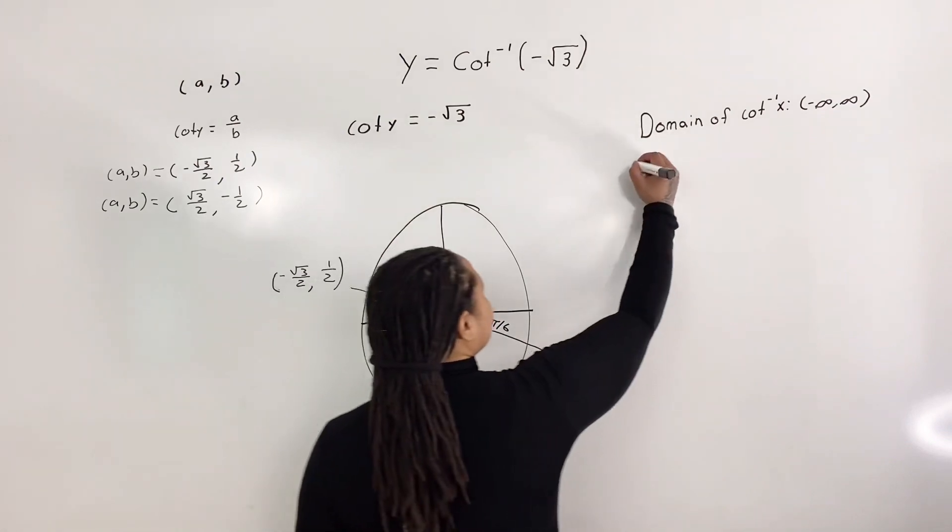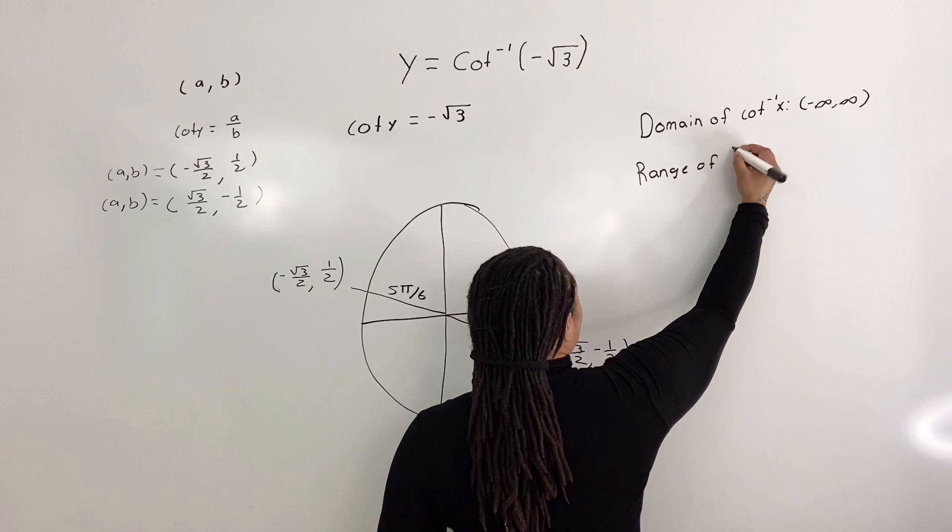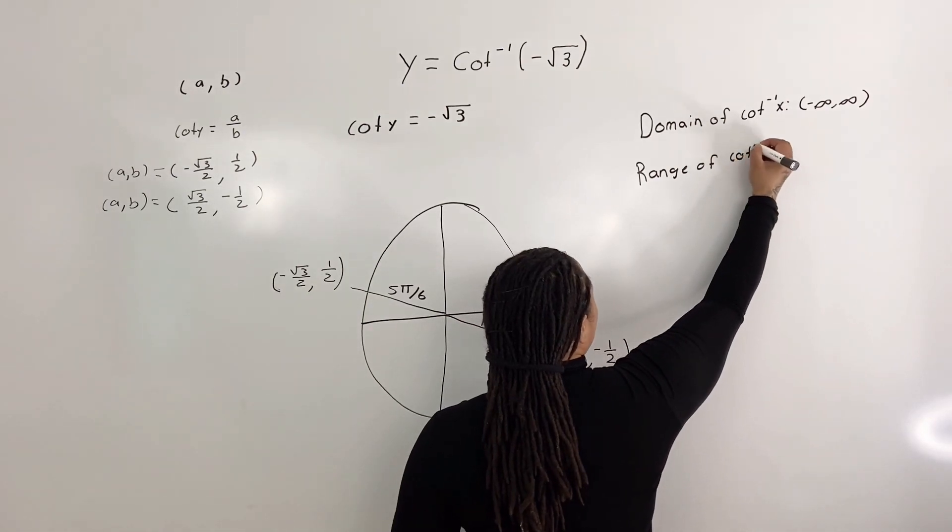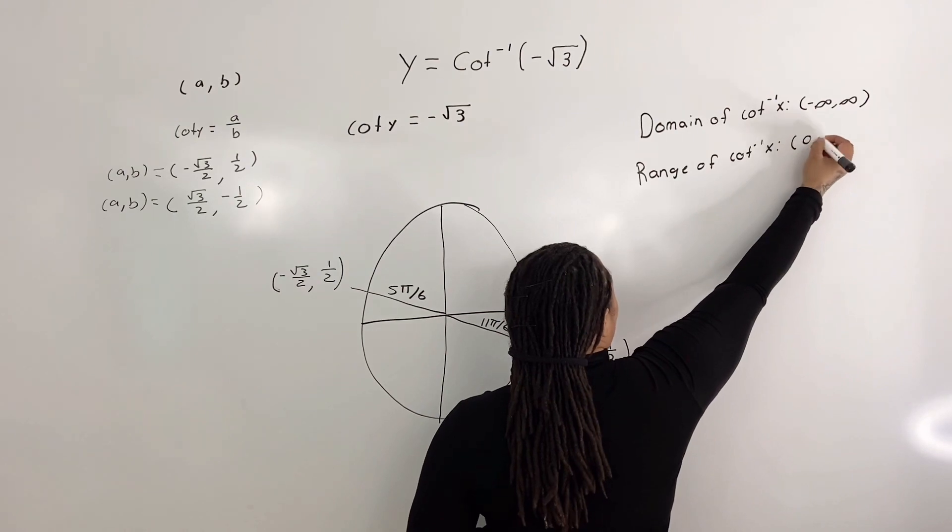So the range of inverse cotangent x is from 0 to pi.